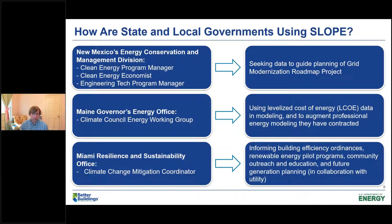How are state and local governments using SLOPE? You're going to hear from Milwaukee, Wisconsin in a few minutes about how they're using SLOPE to support their energy planning. But here are a few other representative examples. New Mexico is using SLOPE to help guide planning of their grid modernization roadmap project. Maine is using SLOPE's levelized cost of energy data to augment professional energy modeling that they've contracted. And the city of Miami, Florida is using SLOPE to inform building efficiency ordinances, renewable energy pilot programs, community outreach and education, and future generation planning in collaboration with its utility.